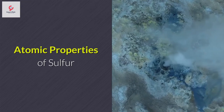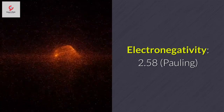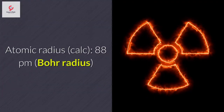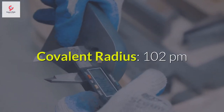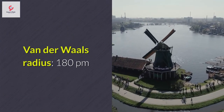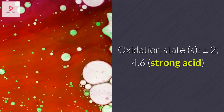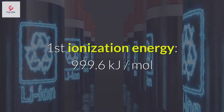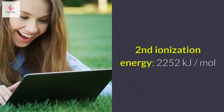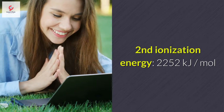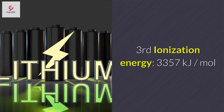Atomic properties of sulfur: average radius 100 pm; electronegativity 2.58 Pauling; atomic radius (calc) 88 pm Bohr radius; covalent radius 102 pm; Van der Waals radius 180 pm; oxidation state ±2, 4, 6 — strong acid. First ionization energy: 999.6 kJ/mol. Second ionization energy: 2,252 kJ/mol. Third ionization energy: 3,357 kJ/mol.